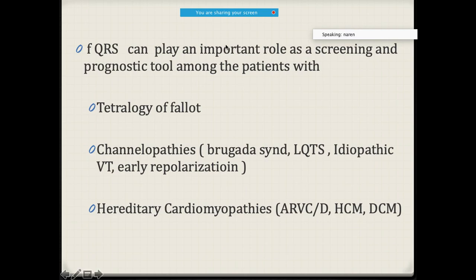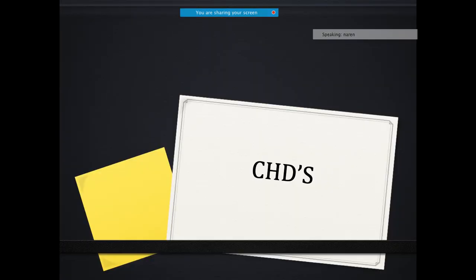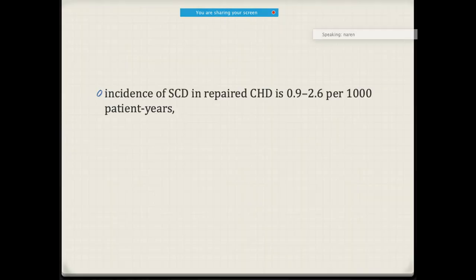Fragmented QRS can be used as an effective screening and prognostic tool. You may encounter such ECG changes in patients with tetralogy of Fallot, channelopathies, or hereditary cardiomyopathies — including ARVC, hypertrophic cardiomyopathy, or dilated cardiomyopathy.